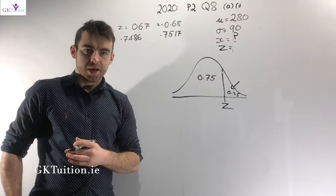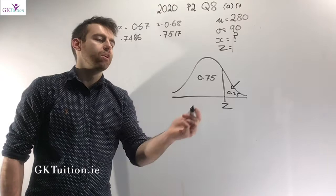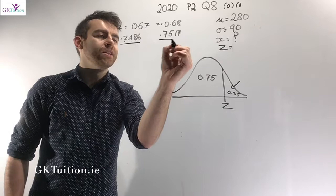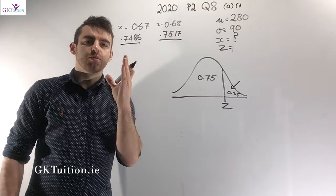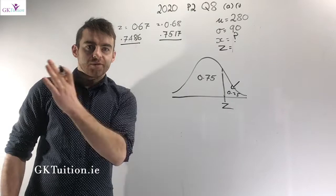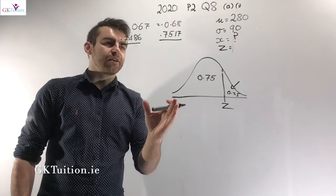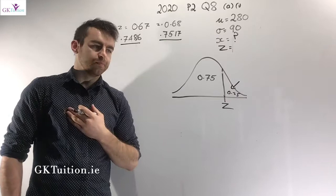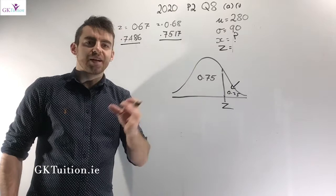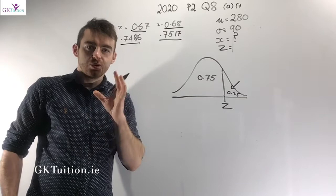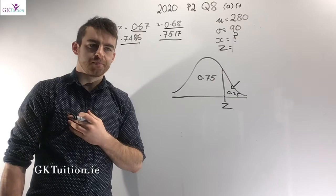Looking at the maths tables for Z-scores, the two proportions closest to 75% are 0.7486 and 0.7517. A Z-score of 0.67 corresponds to 74.86% and a Z-score of 0.68 corresponds to 75.17%. You never go to three decimal places — the maths tables only give values accurate to two decimal places, so I have to select either 0.67 or 0.68. The closest one to 0.75 is 0.67.